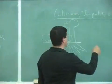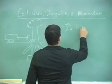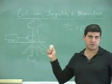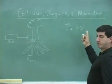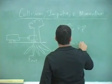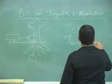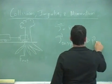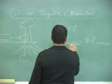Remember the equation: J is equal to change in momentum. Newton's law can be expressed this way — the impulse equals the change in momentum. Now think of the impulse on the system: impulse on system is equal to change in momentum of system.